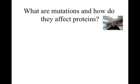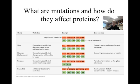Oftentimes, the process of transcription and translation occur seamlessly, creating a functional protein. However, mutations can occur which, in some instances, hinder the process. There are two broad categories of mutations: base substitutions and frameshifts. The three types of base substitutions are silent mutations, missense mutations, and nonsense mutations.